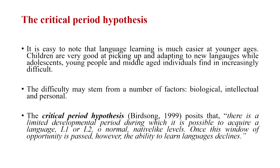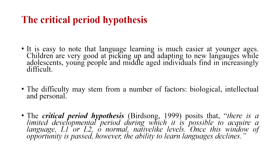The critical period hypothesis, as Birdsong aptly summarizes, is basically that there is a limited developmental period during which it is possible for individuals to acquire a language — whether L1 or L2 — to normal or native-like levels. This is mainly a biological argument which says that once this window of opportunity is passed, the ability to learn languages steadily declines over time. Children are very good at picking up languages swiftly, but this ability apparently diminishes with age — the older you get, the harder it becomes to grasp another language.